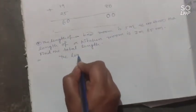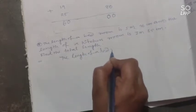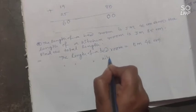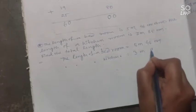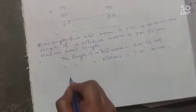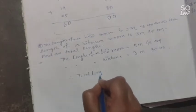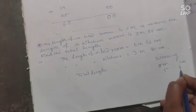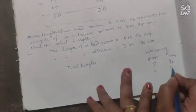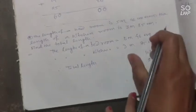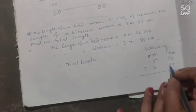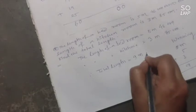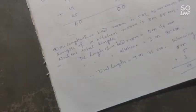First write what is given: length of bedroom = 5 meter 46 centimeter, length of kitchen room = 3 meter 85 centimeter. Now add them in the meter and centimeter columns. 6 plus 5 is 11, carry 1. 4 plus 8 is 12, plus 1 is 13, carry 1. 5 plus 3 is 8, plus 1 is 9. Total length = 9 meter 31 centimeter.